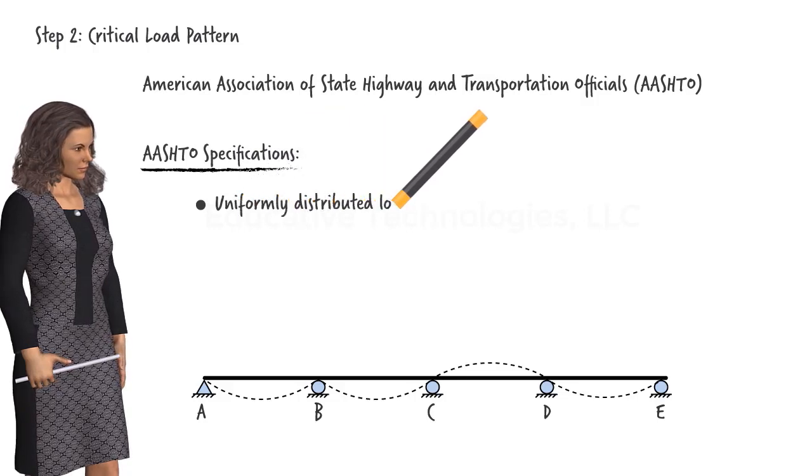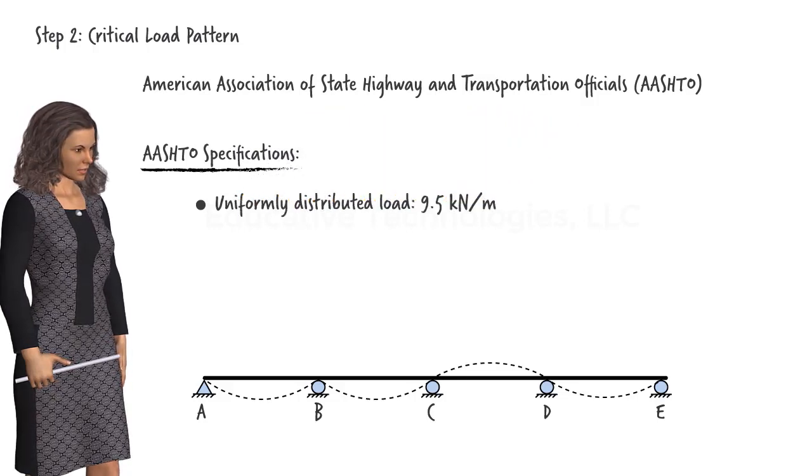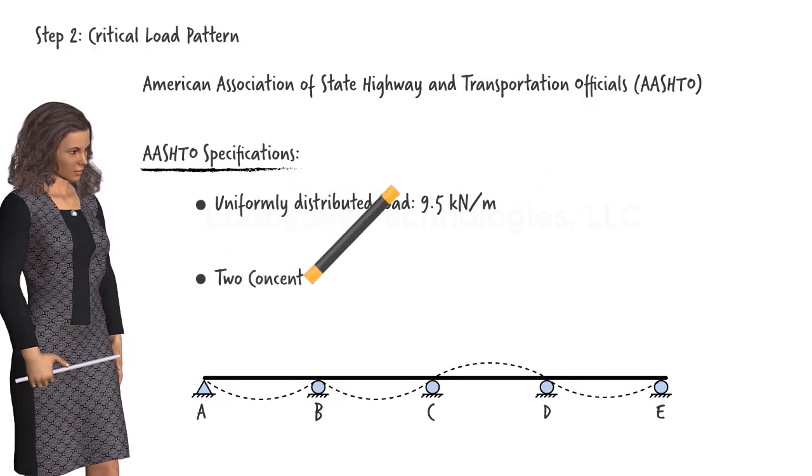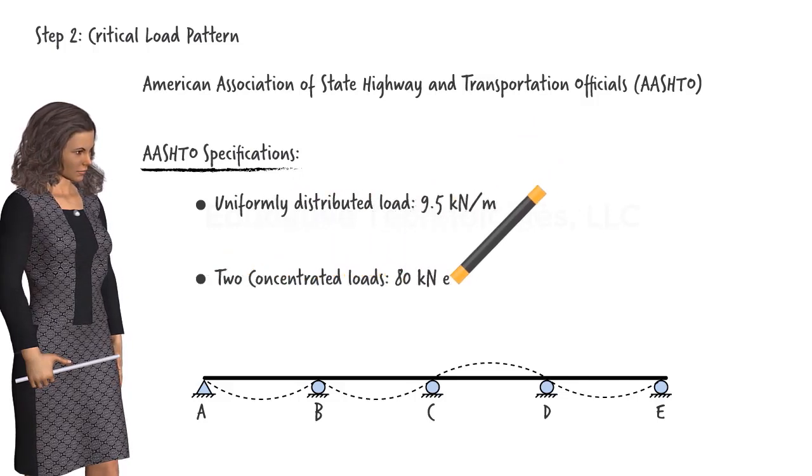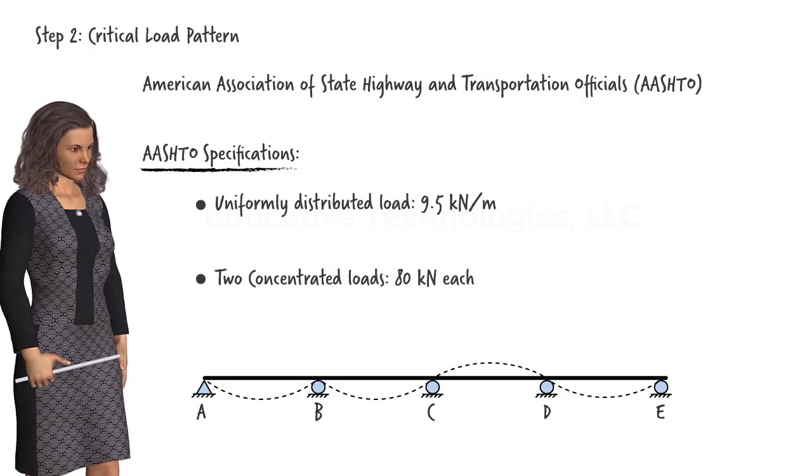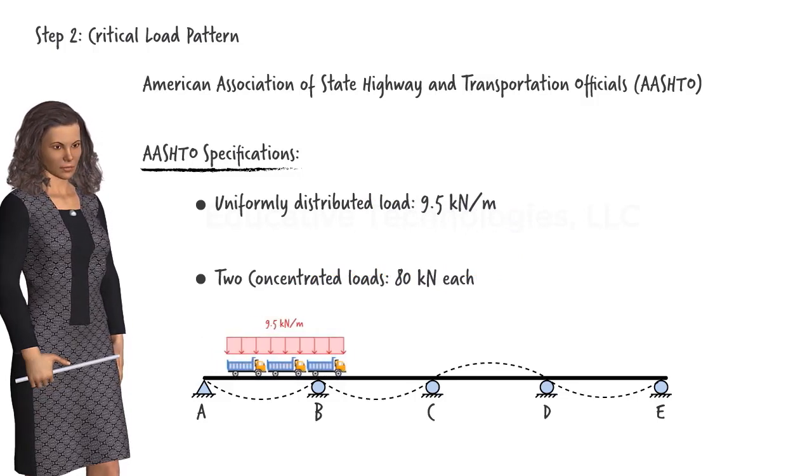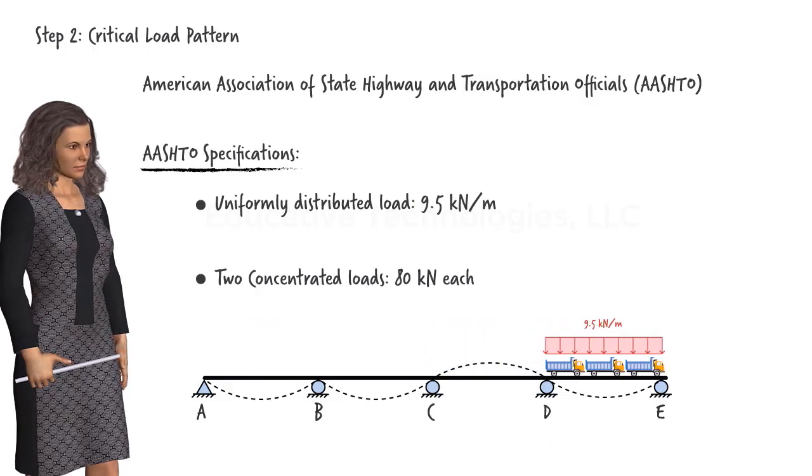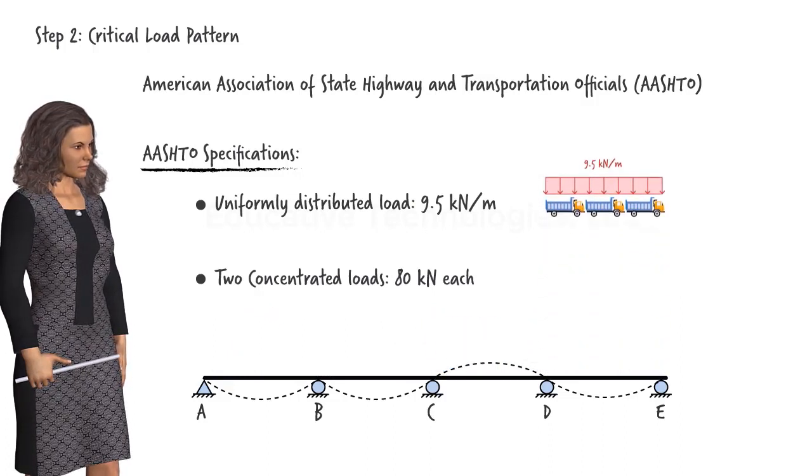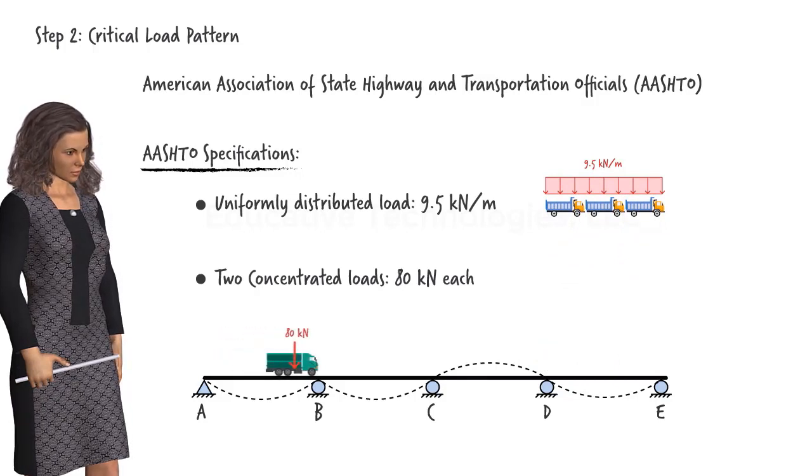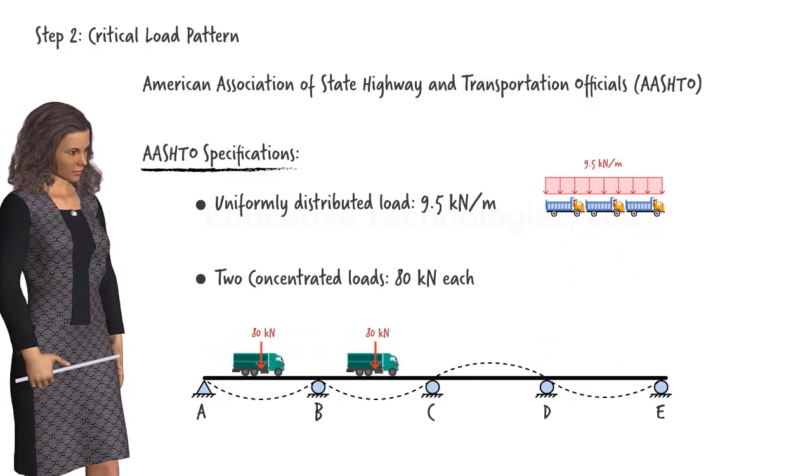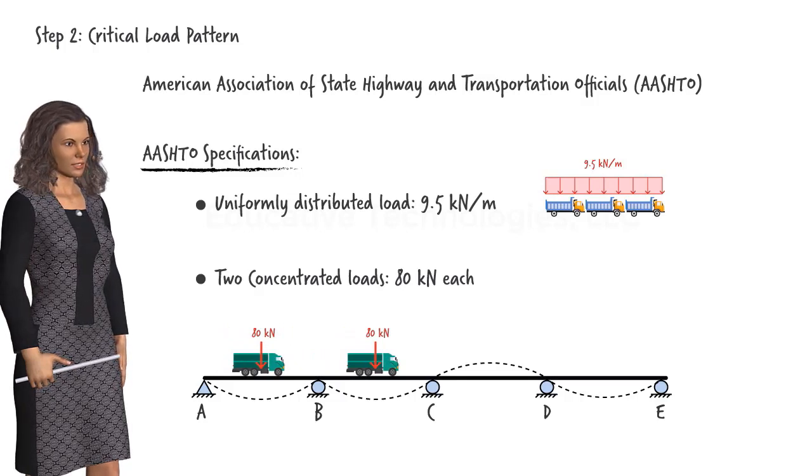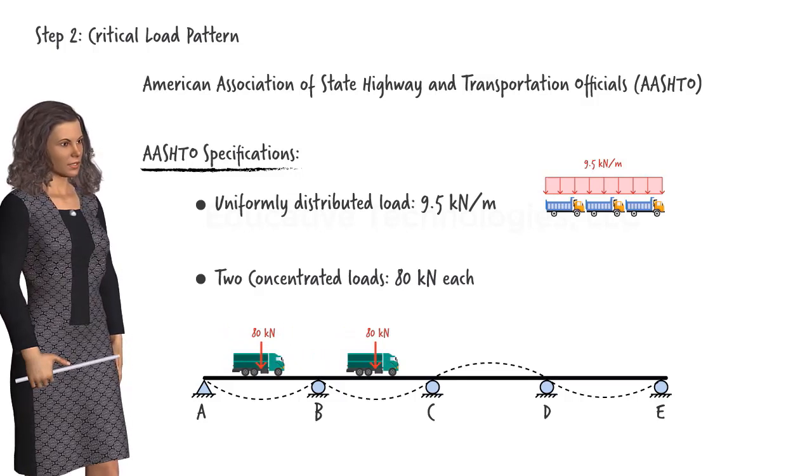A uniformly distributed load with a magnitude of 9.5 kN per meter and a pair of concentrated loads each having a magnitude of 80 kN. The distributed load simulates the load due to a series of trucks moving across the bridge in tandem. The concentrated loads simulate the weights of two individual trucks placed strategically on the bridge to induce maximum negative moment at the support.